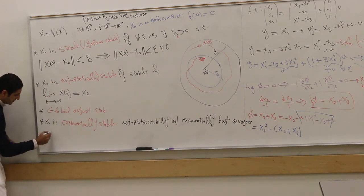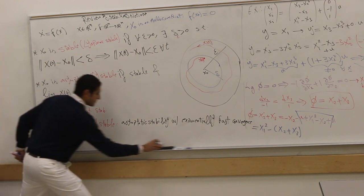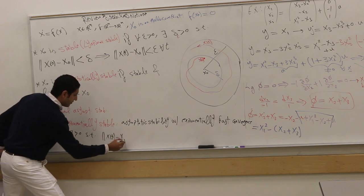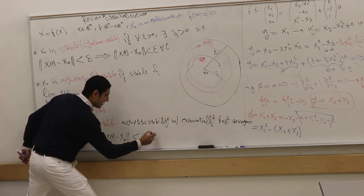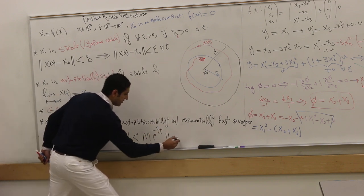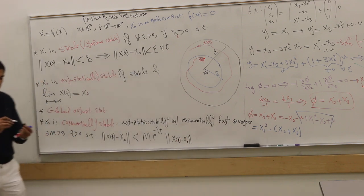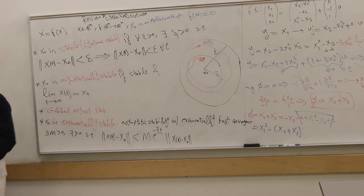In mathematical words, it means that there exists a bound M, an exponent lambda, such that the response, the difference between the response and the equilibrium, decays exponentially fast. Again, e to the power negative lambda t times the initial disturbance x_0 minus x_0, okay? So the initial disturbance decays exponentially fast.